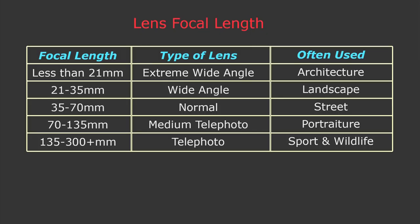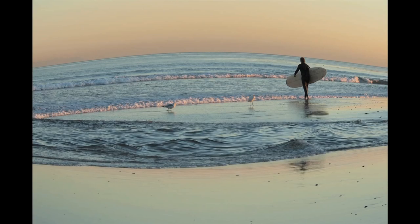Depending on focal length we can divide all lenses into different types. Lenses with less than 21 millimeters of focal length are considered extreme wide angle lenses. These lenses are very often used in architecture, especially indoors, because when you want to get as much room as possible in your shot you don't have a lot of space to step back — this is when the wide angle comes in handy. Among extreme wide angle lenses there is a special type called fisheye. Fisheye lenses are known for the distortion they create, like a rounded horizon effect.